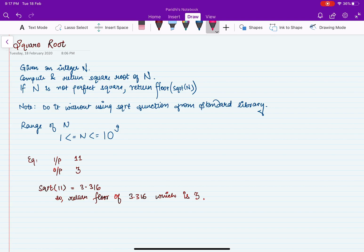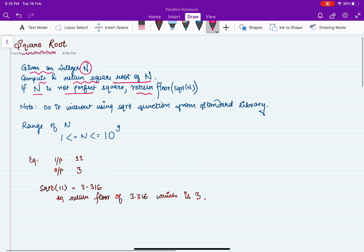Hi guys, in this video let's talk about a problem finding the square root of an integer. Given an integer n, you have to compute and return the square root of n. If n is not a perfect square, return the floor of square root of n, and do it without using the square root function from the standard library.